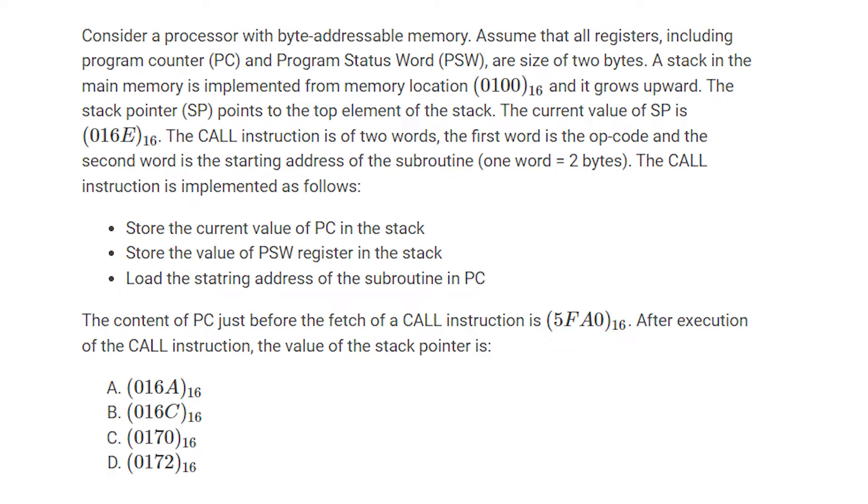First, store the current value of PC in the stack. Second step is store the program status word in the stack. Third step is load the starting address of subroutine into PC. The question is: the contents of PC just before fetch of call instruction is 5FA0 in hexadecimal. After the execution of call instruction, the value of stack pointer is?